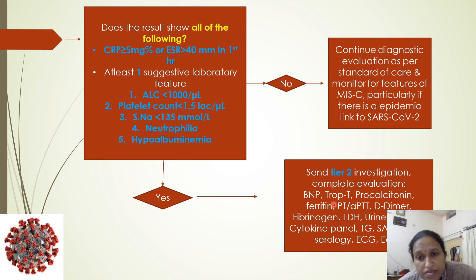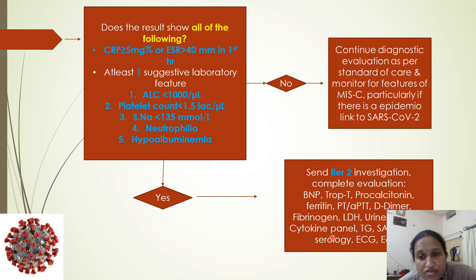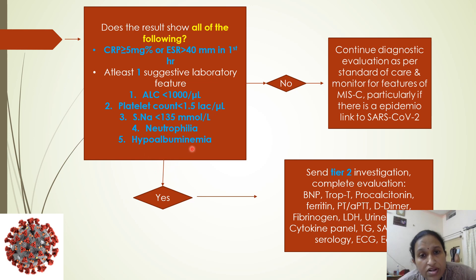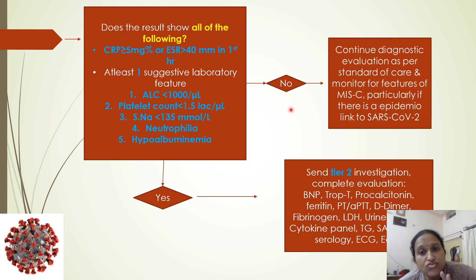Tier 2 complete evaluation includes brain natriuretic peptide, troponin-T, procalcitonin, ferritin, PT/PTT, D-dimer assay, fibrinogen, LDH, urine examination, cytokine panel with interleukin-6 and interleukin-1 levels, triglycerides, liver function tests, serology, ECG, and echocardiography. If Tier 1 criteria are not fulfilled, we continue diagnostic evaluation per standard of care and monitor for features of MIS development, particularly if there is an epidemiological link to SARS-CoV-2.